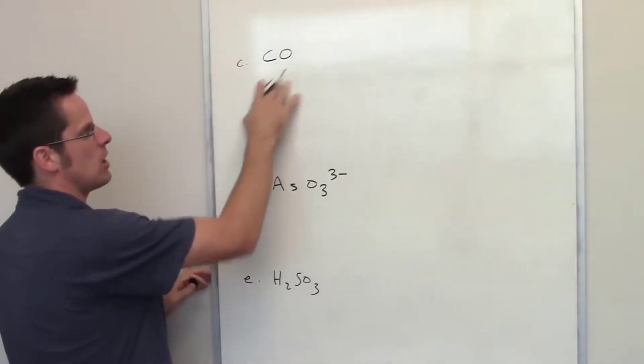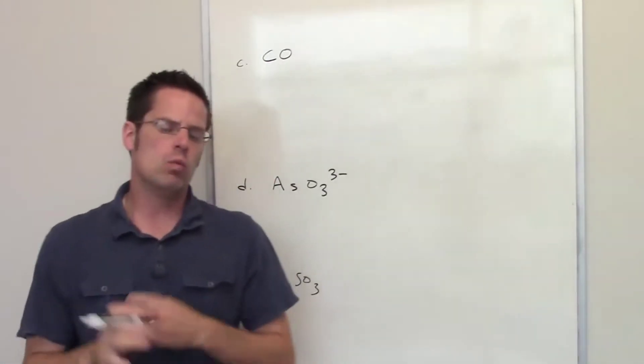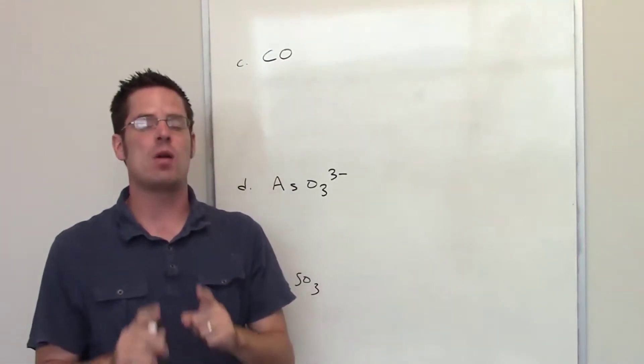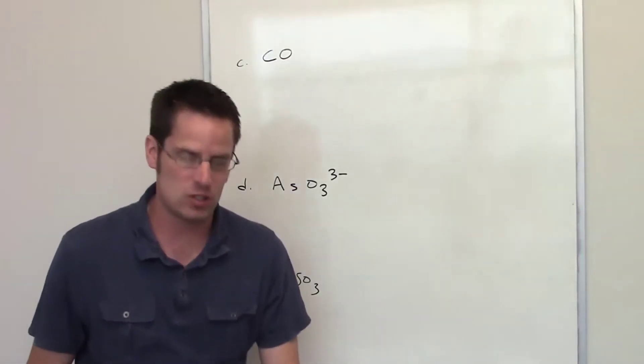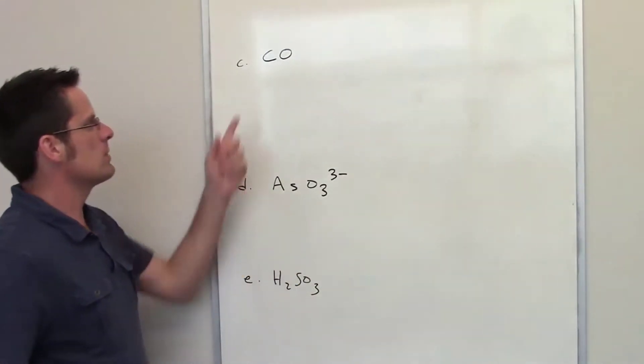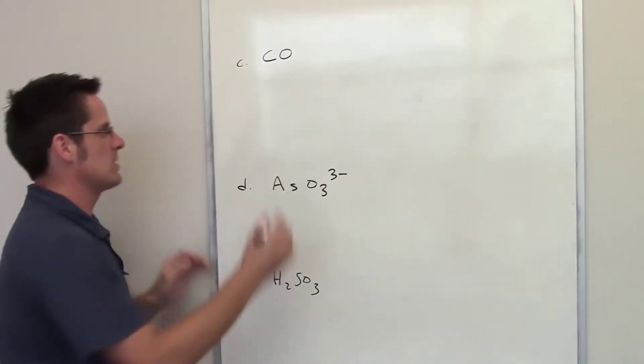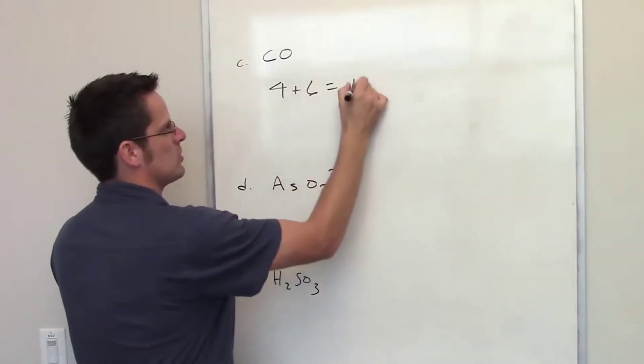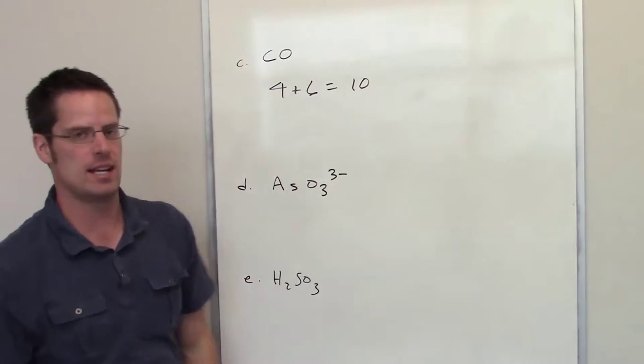This first one is carbon monoxide. The way you draw a Lewis structure is you first of all count up the total number of valence electrons that you're dealing with. Carbon is in column 4a of the periodic table, so it has four valence electrons.